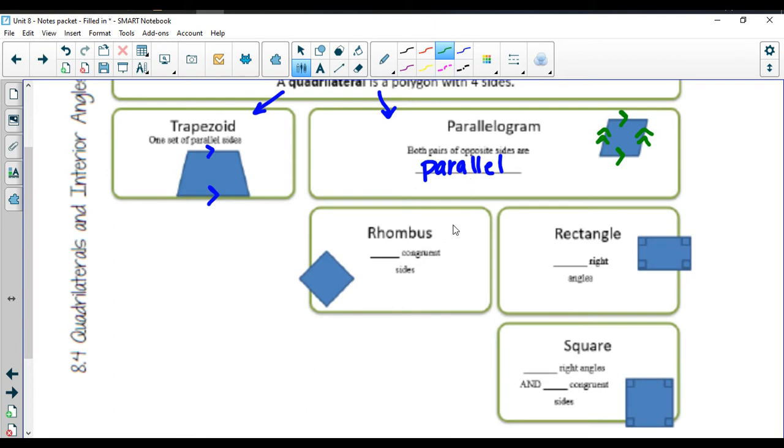From parallelogram, we have two divergent paths here. We can either become a rhombus, if we're a special one. And a rhombus is also going to have the two sets of parallel sides, but also four congruent sides. So in addition to these sides being parallel, they are also all exactly the same length. So what's the difference between this and a square? The problem is with a rhombus, you do not need to have 90 degree angles.